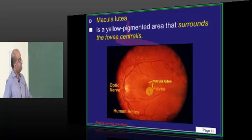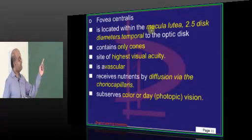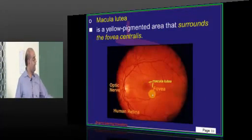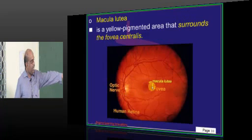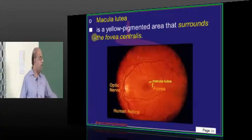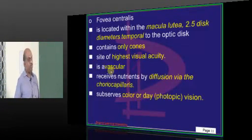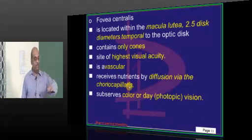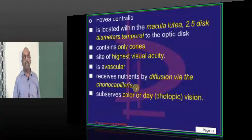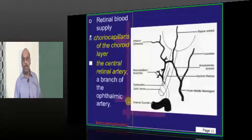Then you have macula lutea, which is a yellow pigmented area that surrounds the fovea centralis. Fovea centralis is about 2.5 disc diameters from the optic disc. The optic disc is here, 2.5 disc diameters temporal will be the fovea centralis. Fovea needs to be remembered because it has only cones. Optic disc needs to be remembered because it has no rods, no cones. The fovea is avascular and receives nutrients by diffusion from the choriocapillaris. Since it has cones, it mainly helps in photopic day vision and color perception.